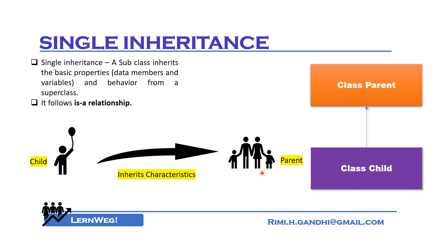The subclass inherits data members, variables, and behaviors from its parent class, called the superclass — that is single level inheritance. For a real-world example, the parent can be a Car class, and the child can be Lamborghini or Maruti. A car has four wheels, an engine, a mirror — these are its common characteristics.